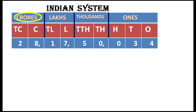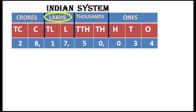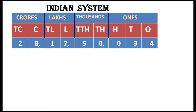Reading from the left: twenty-eight crores, seventeen lakhs, fifty thousands, thirty-four. No need to say 'ones' because it is in the ones place — we only say thousands, lakhs, and crores while reading the number.